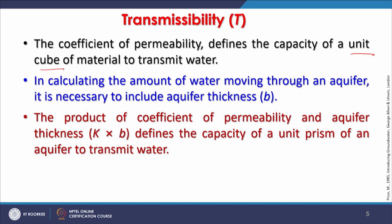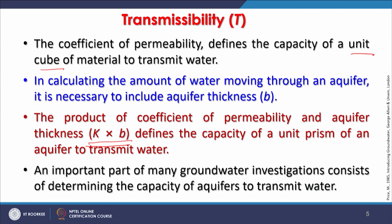The product of the coefficient of permeability and the aquifer thickness — K multiplied by B — defines the capacity of a unit prism of an aquifer to transmit water. This is an important part of many groundwater investigations, which involve determining the capacity of an aquifer to transmit water across whatever saturated thickness is present. This is very important from a groundwater or well efficiency point of view.